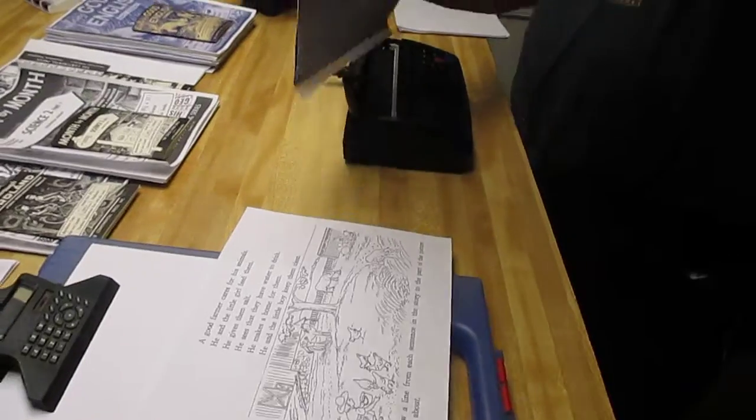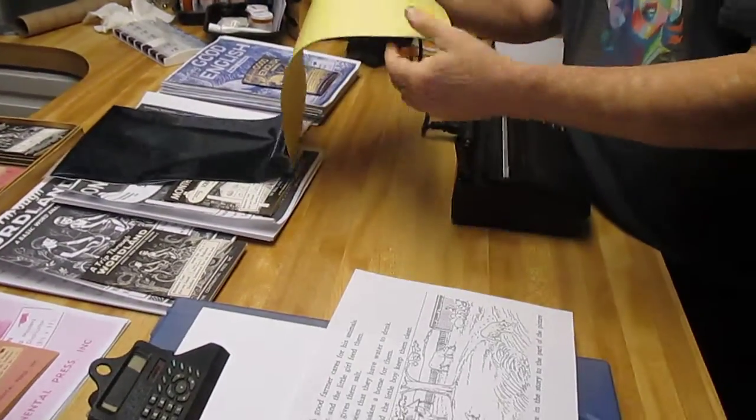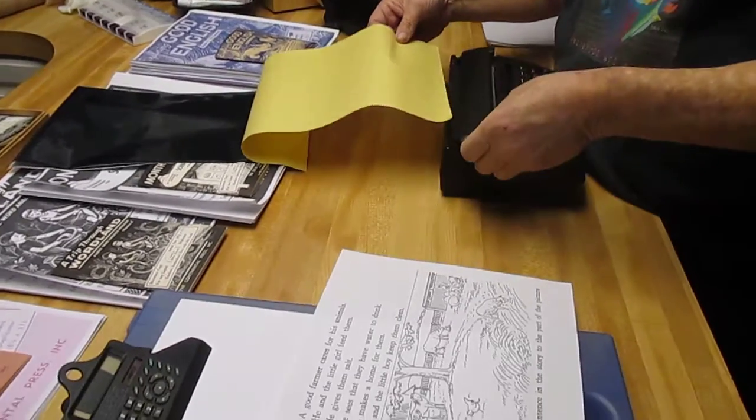You take the white side face down, you take the yellow sheet and slide it into the back.